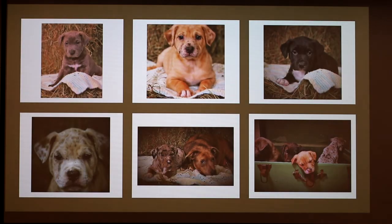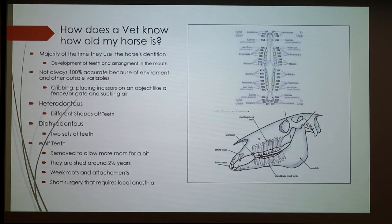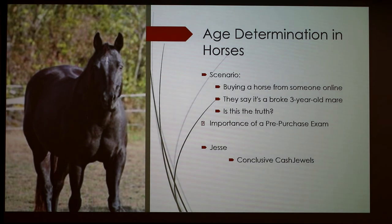Horse teeth keep erupting out of the jaw, and that's why that groove can show up and disappear after a while. You mentioned at the beginning that somebody was dishonest — when you're going to buy a horse, sometimes someone online will say they have a perfectly broke three-year-old mare that's been ridden and trail-ridden, when you could actually be getting an eight-year-old horse, because just the condition of the horse doesn't tell its age too well.